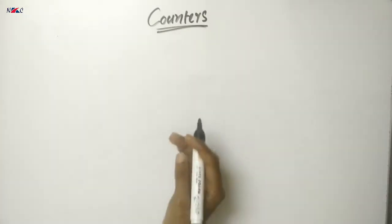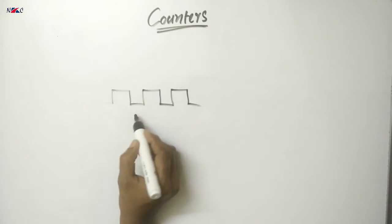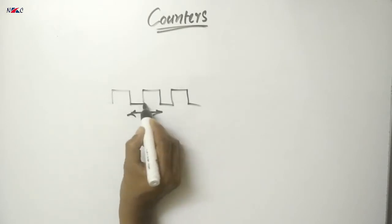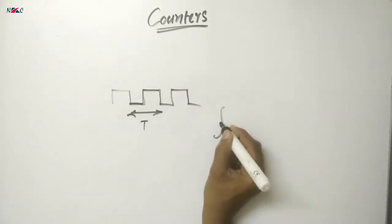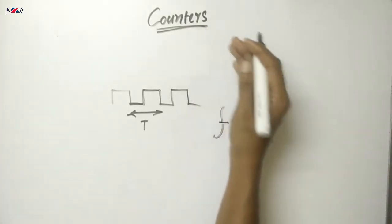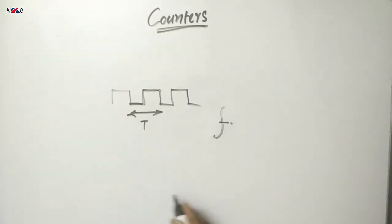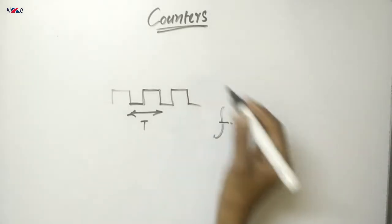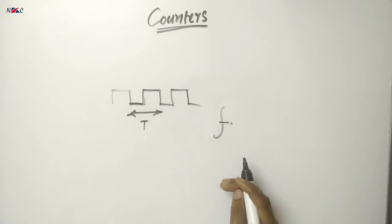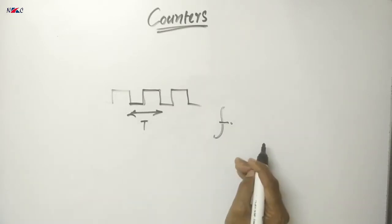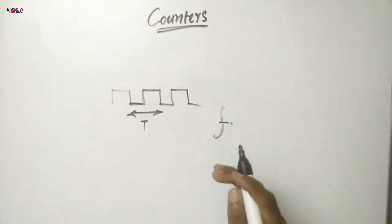Another application is as a frequency divider. If we use a clock pulse as the counter input — a continuous train of pulses with a certain time period and frequency F — the counter will produce waveforms at the output of each flip-flop with a frequency that is a fraction of the clock frequency. Therefore, a counter can also be called a frequency divider circuit.